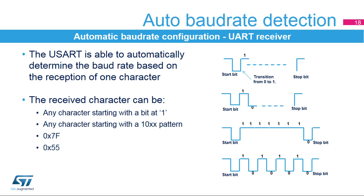With character 0x7F, the baud rate is updated first at the end of the start bit, then at the end of bit 6.